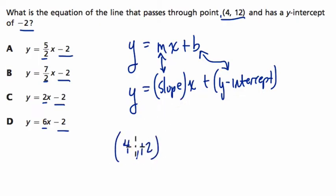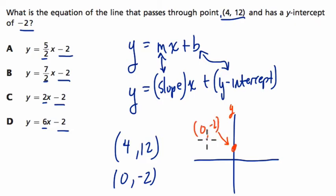If one point is (4, 12) and the other point is (0, -2)—I knew it was (0, -2) because it's a y-intercept, which means it's on the y-axis. So here we got (0, -2) and (4, 12) up here somewhere.